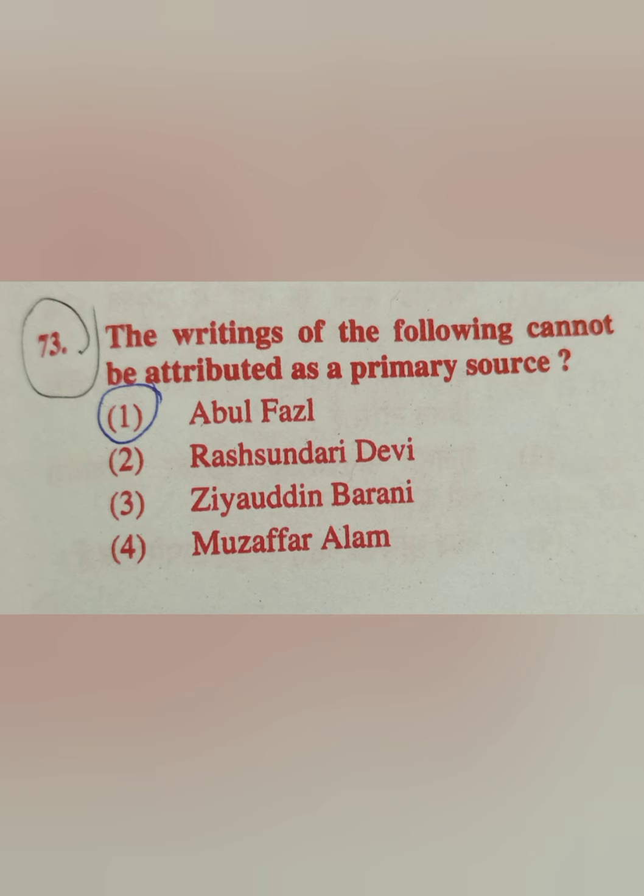Question 73: Which of the following cannot be attributed as a primary resource? Options: Abul Fazl, Rajsundari Devi, Ziauddin Barani, Muzaffar Alam. The correct answer is option 4 — Muzaffar Alam.